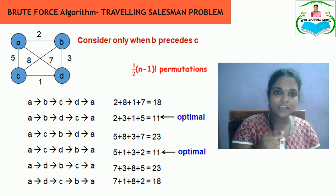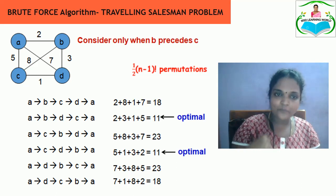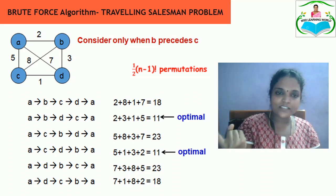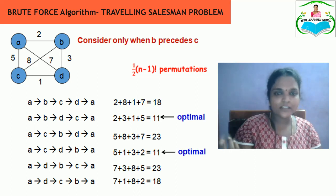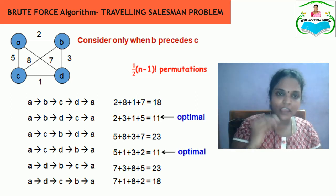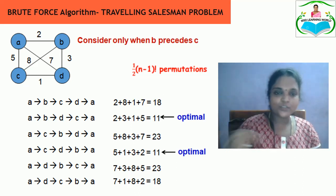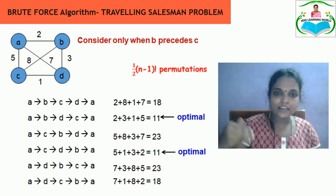Similarly: A→B→D→C→A has distance 11. A→C→B→D→A has distance 23. A→C→D→B→A has distance 11. A→D→B→C→A has distance 23. A→D→C→B→A has distance 18. So the list of all distances is 18, 11, 23, 11, 23, and 18.